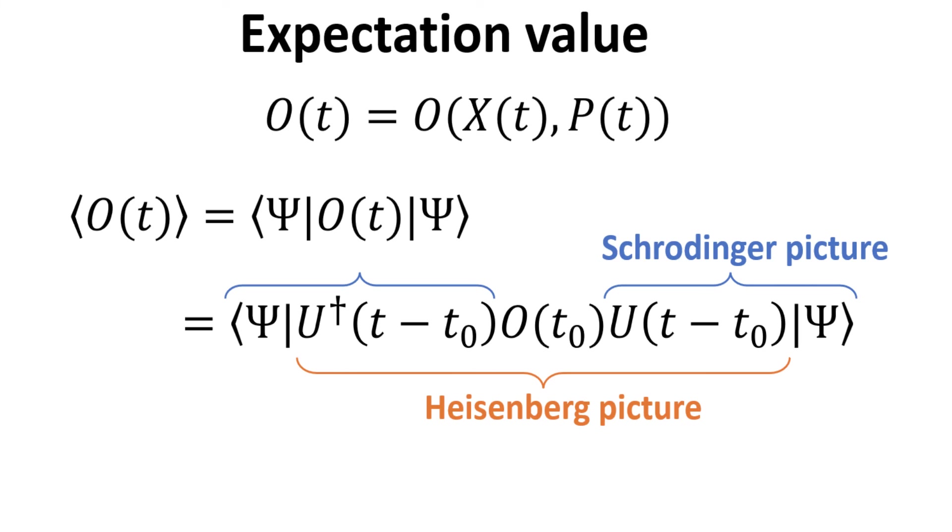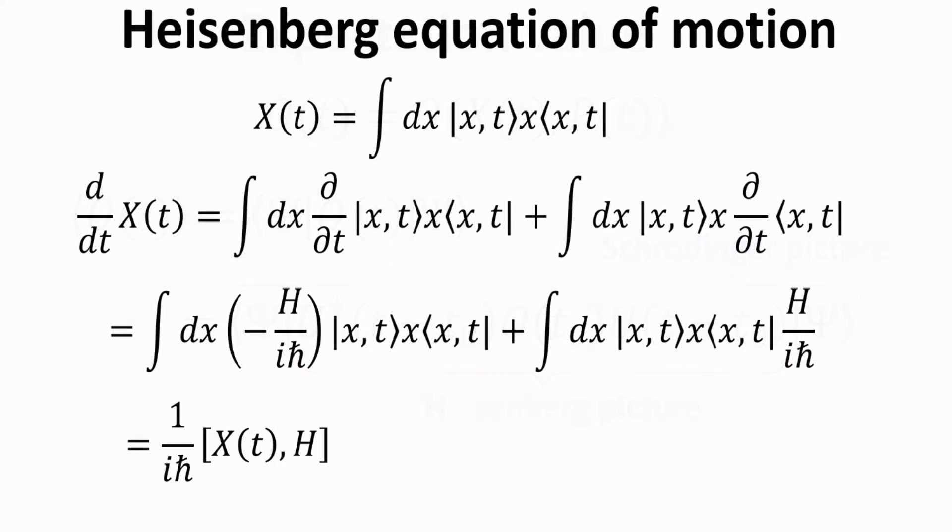Hence, the physical quantities we compute will be equivalent in these two pictures, which is expected since they are related via a unitary transformation. Since in the Heisenberg picture it is the operator that describes the time dynamics, we should have a dynamical equation for it, called the Heisenberg equation of motion.